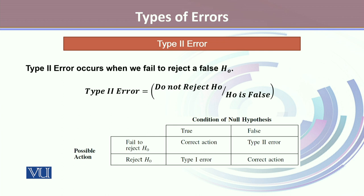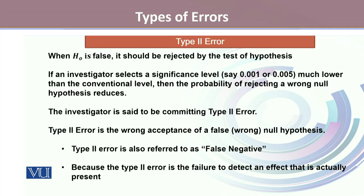The other type of error that we can make in the process of testing of hypothesis is Type II error. Type II error occurs when we fail to reject a false null hypothesis. That is, we do not reject H0 given that H0 is false.